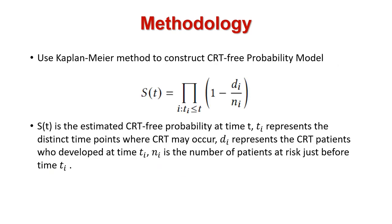We also use the Kaplan-Meier method to give CRT-free probability over time. S(T) is the estimated CRT-free probability at time T. T_i represents the distinct time points where CRT may occur. D_i represents the CRT patients who develop at time T_i. N_i is the number of patients at risk just before time T_i.